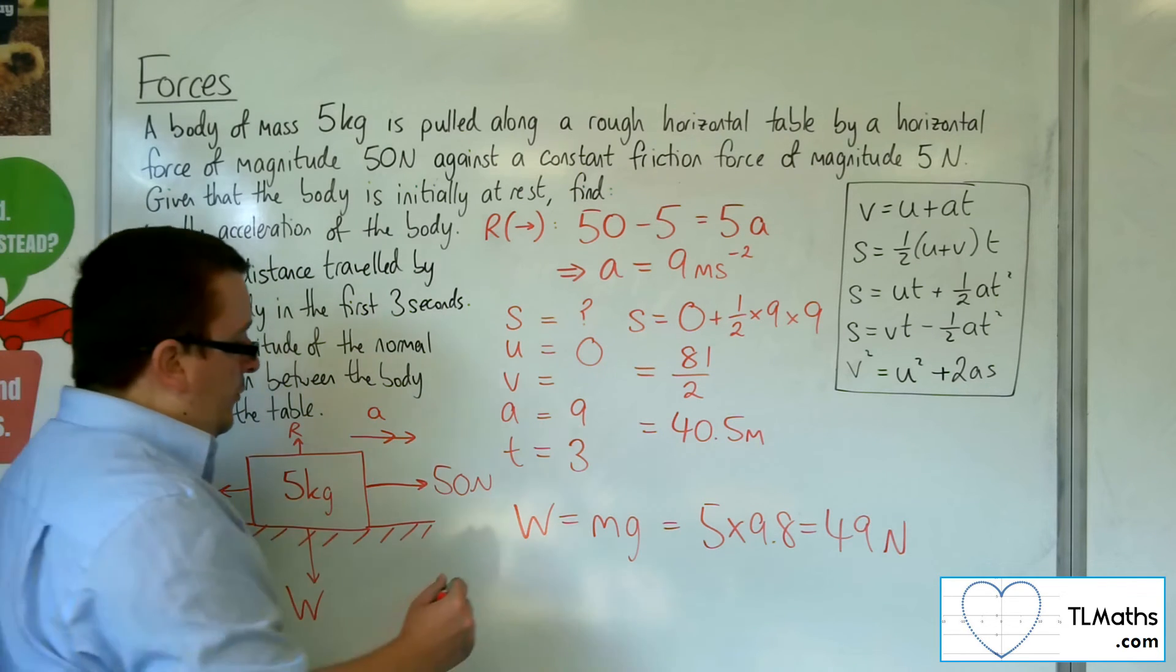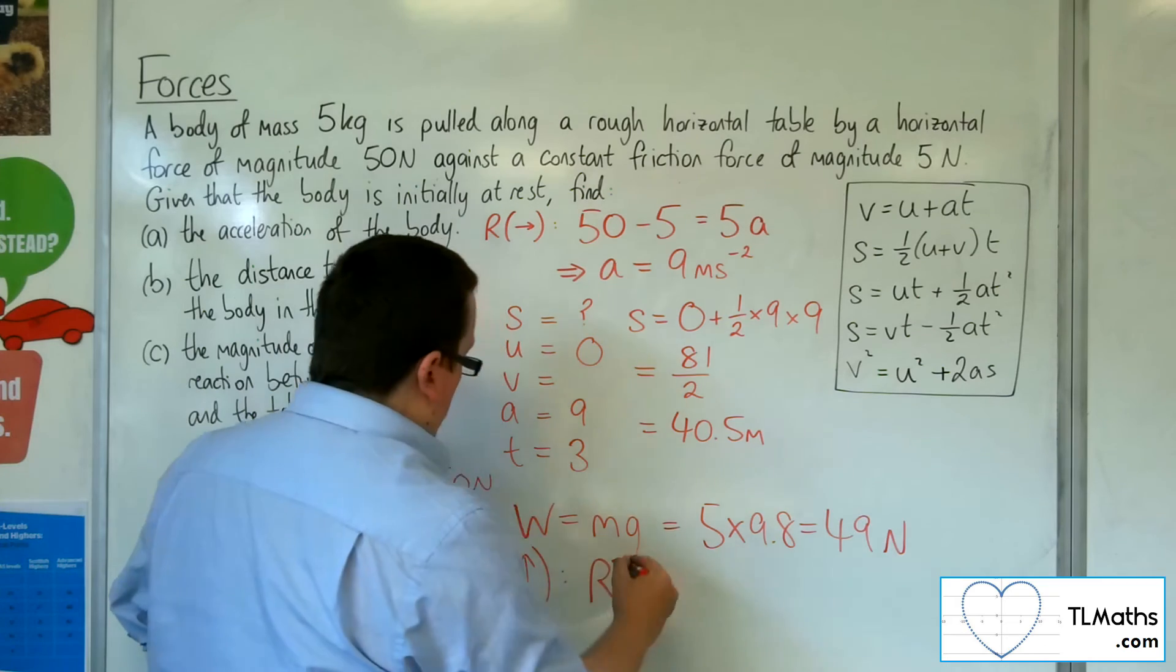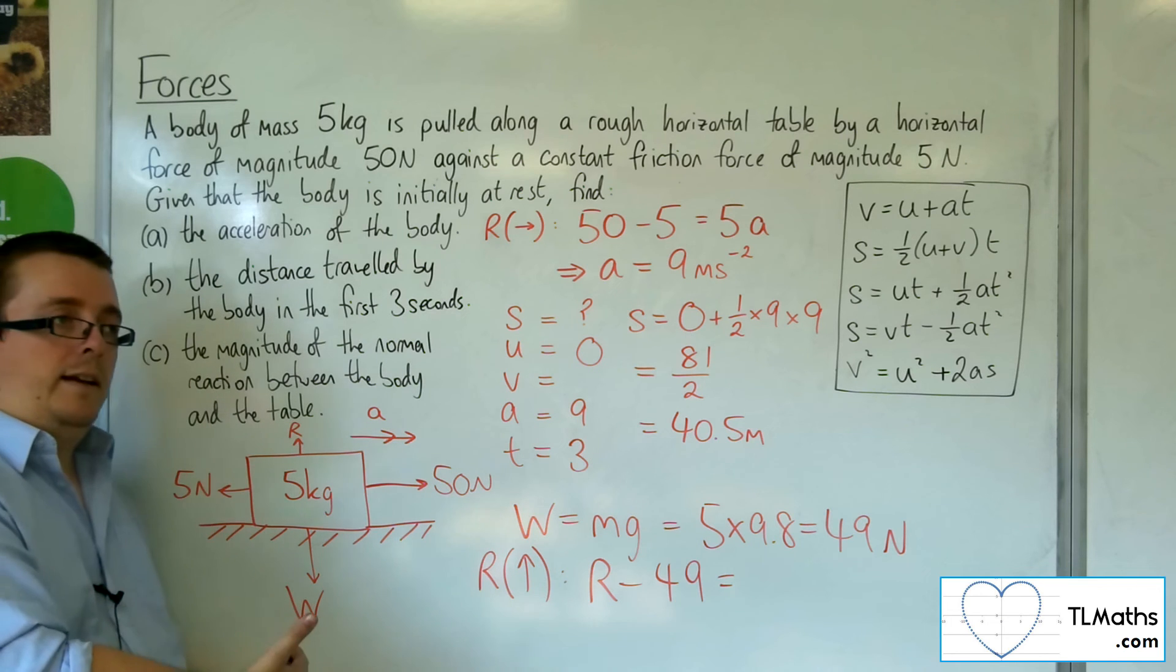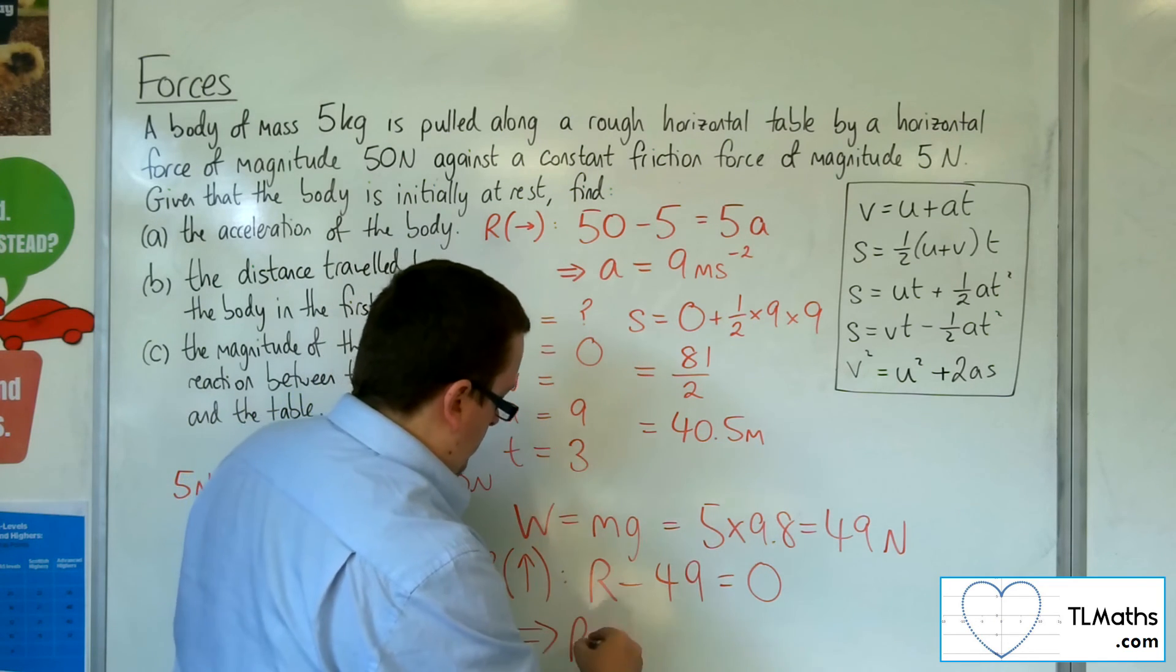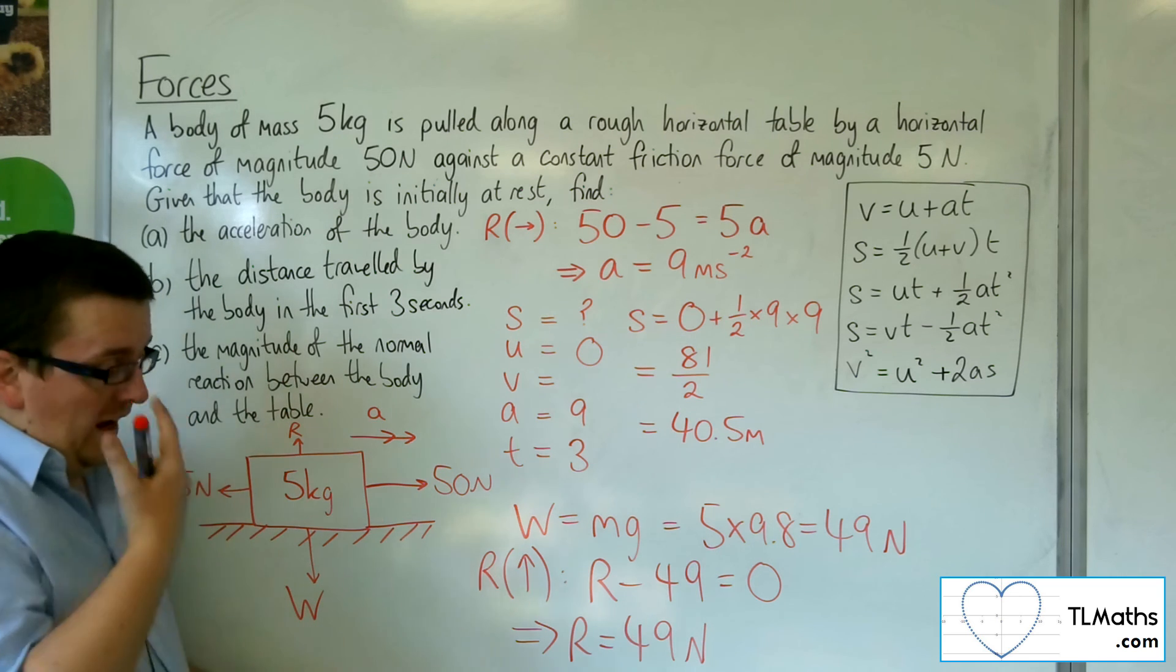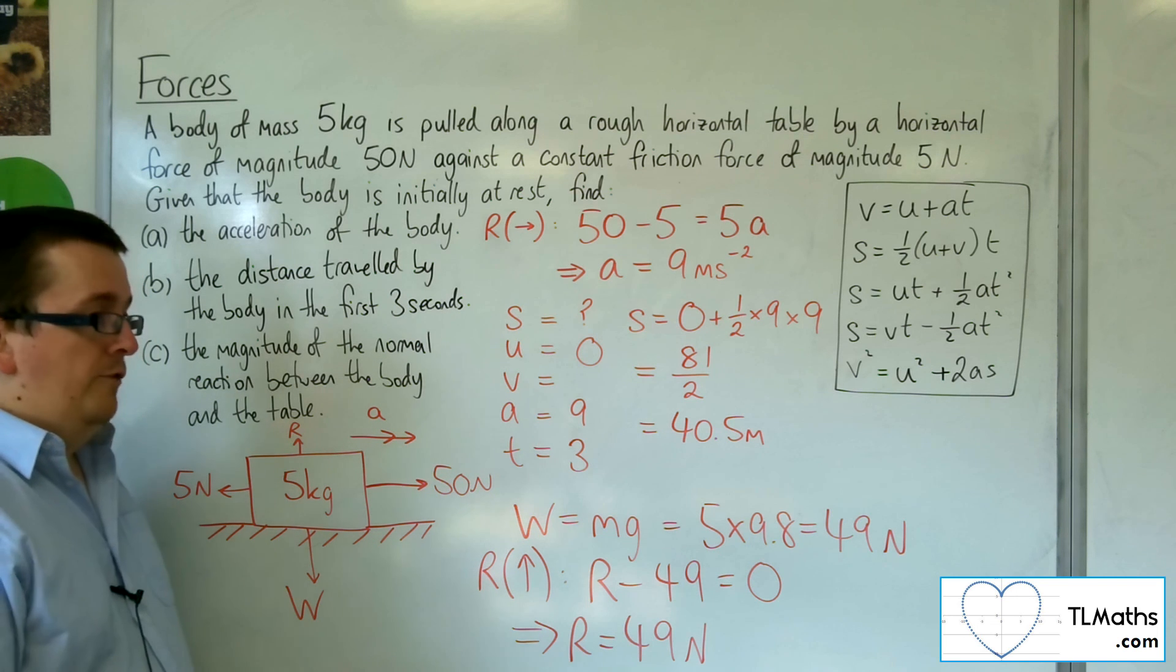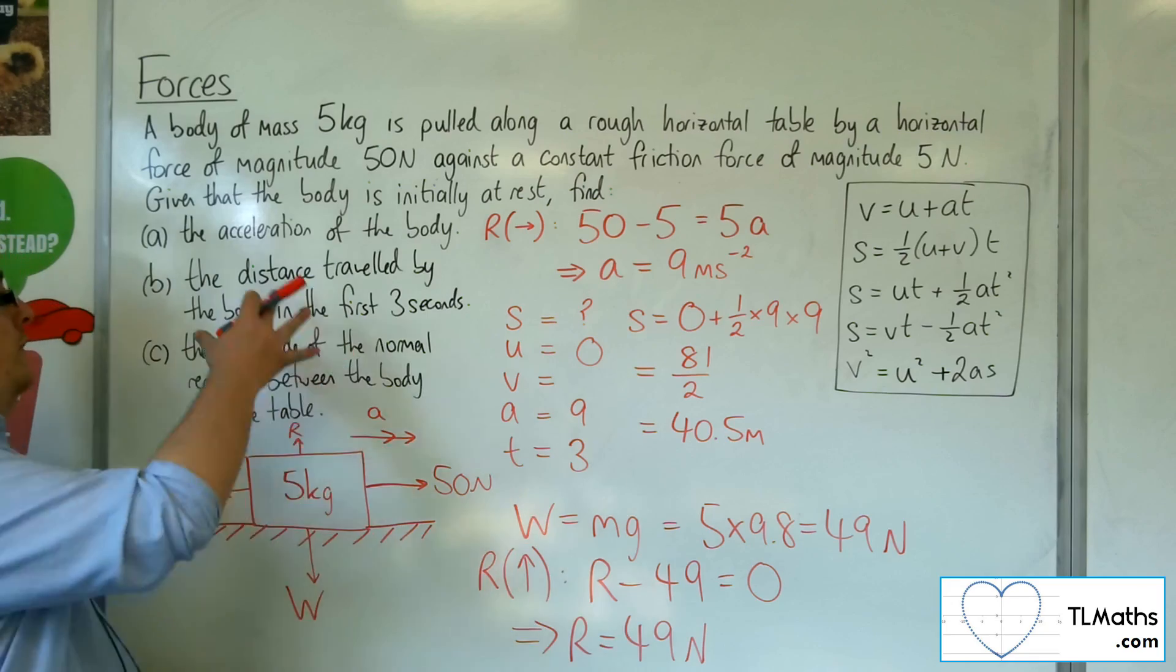Now, to get the normal reaction force, I'm going to have to resolve vertically. I'm going to take up as positive because that's the direction of the normal reaction. So we've got the R working upwards. I've got the weight working downwards, so that's the 49 newtons. And that's going to be equal to mass times acceleration. But we're not accelerating vertically, so the acceleration in the vertical direction is 0. So that means that R is also 49 newtons. And this makes sense because these forces must be equal and opposite. Otherwise, the body is going to sink into the ground, into the table. Or if the normal reaction force was more than the weight, then the particle would be floating off into the air, which wouldn't make any sense either. So that is how we can solve these three problems.